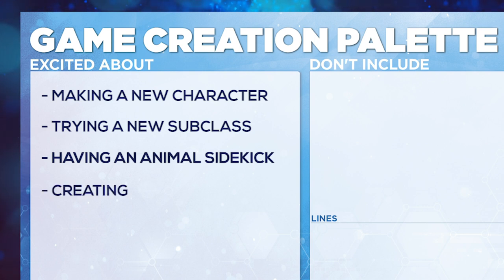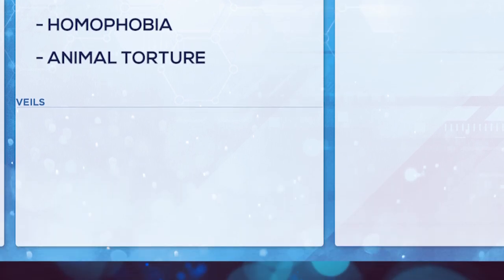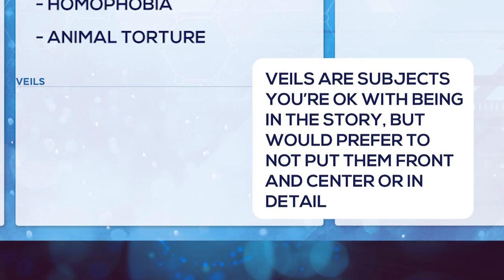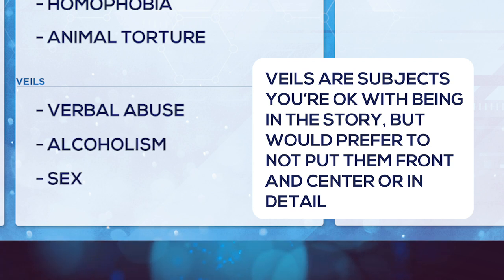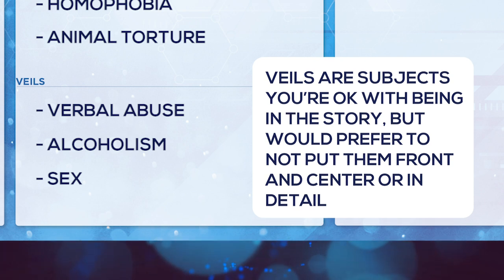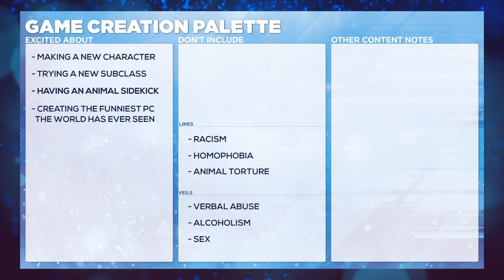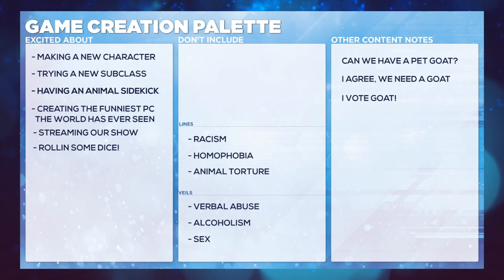This is a great place to list some lines and veils. Lines are hard limits that you and your players don't want to explore in-game. Veils is subject matter that you're okay with being in the story, but you would prefer it not to be front and center or in detail. This is a way to still deal with certain themes without having them become the main focus.